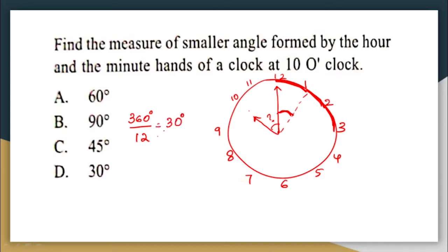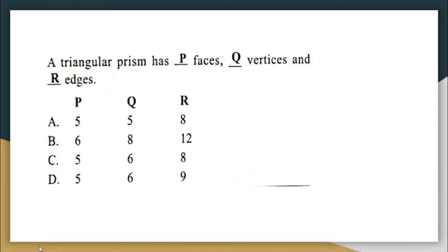The angle between each point is 360 divided by 12, which equals 30 degrees. At 10 o'clock, the angle between 10 and 12: from 10 to 11 is 30 degrees, and from 11 to 12 is another 30 degrees. So the angle between 10 and 12 is 30 plus 30, which equals 60 degrees. The angle between the minute hand and the hour hand at 10 o'clock is 60 degrees — option A.